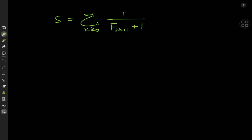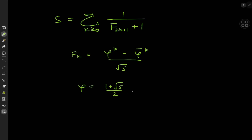There's this really cool generating formula for them, where the Fibonacci number F_k is given by phi, the golden ratio, to the k minus phi-bar to the k — which is sort of the conjugate of the golden ratio — divided by root 5. Now phi equals (1 + √5)/2, and phi-bar equals (1 − √5)/2.